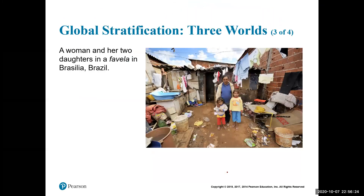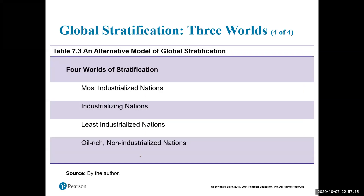Looking at global stratification in the third world: Brazil is normally seen as a gorgeous, desirable place, but it is an industrializing nation where life is cheap for the poor. This image shows a mother with two kids — apparently pregnant with a third — in their living arrangements, which are very poor-quality housing. This would not appear in a 'visit Brazil' advertisement. We've covered the four categories of the stratification model, including oil-rich, non-industrial, and least-industrialized nations.